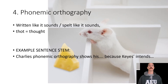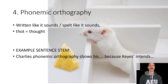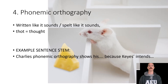Fourth is phonemic orthography. A phoneme is a sound — the sound that a word makes. Orthography is the way something is written or a style of writing. So phonemic orthography basically means written or spelt like it sounds — for example, 'thort' instead of 'thought'. Finish this off: 'Charlie's phonemic orthography shows his [something] because Keyes intends...'